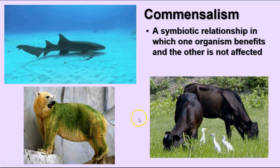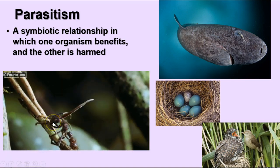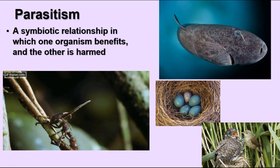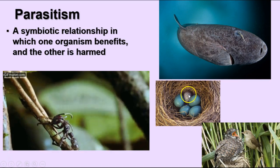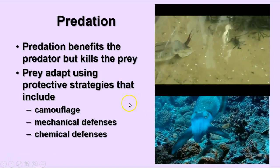In parasitism, one organism benefits and the other is harmed. One example is the cordyceps fungus, which attacks insects, eats through their bodies, and eventually kills them — the insect's body provides food for the fungus to grow and reproduce. Another example is cuckoos, which lay their eggs in another bird's nest, letting that bird hatch and feed the cuckoo's young.